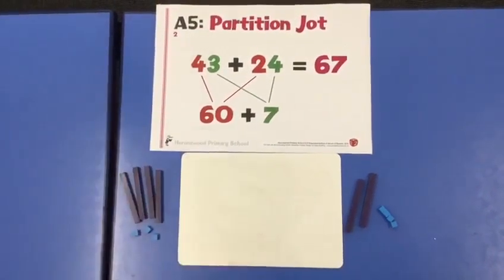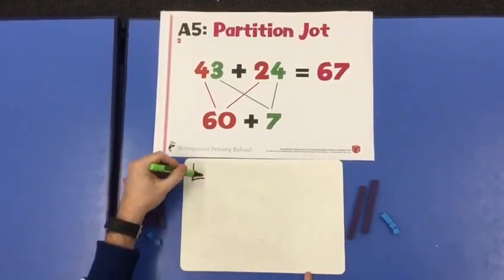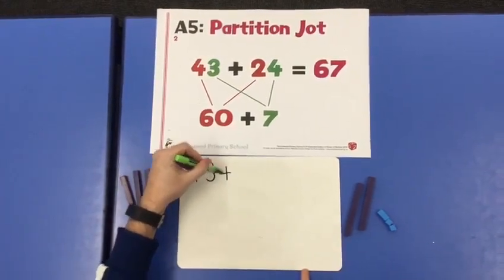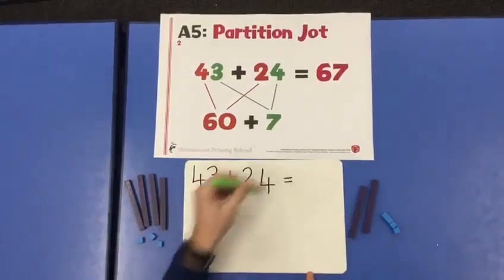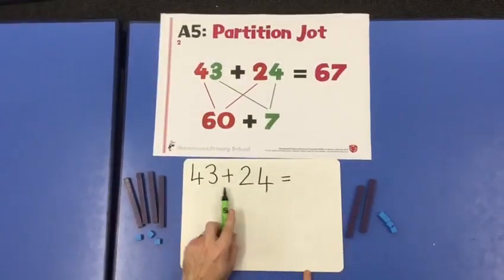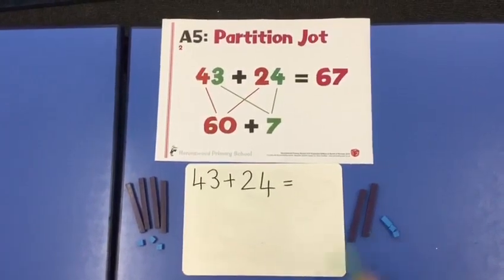It's called the partition jot, so I'm just going to quickly run through this for you. First we would write out the calculation or the number sentence. 43 add 24 equals 4 tens and 3 ones add 2 tens and 4 ones.